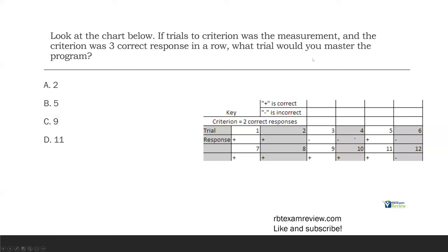In this case, it's asking a little different question. It's asking you specifically what trial would you master the program? Well, if we look at our chart, we know plus is correct and minus is incorrect. And the criterion is three correct responses in a row. So, one and two, we both have pluses, but then we have a minus, so we have to reset. Five, we have a plus, then a minus. Seven, eight, nine, three correct responses in a row, now we've hit our criterion. Our answer is going to be C.